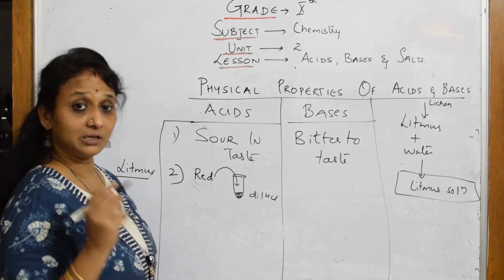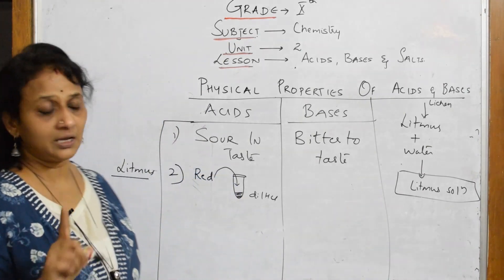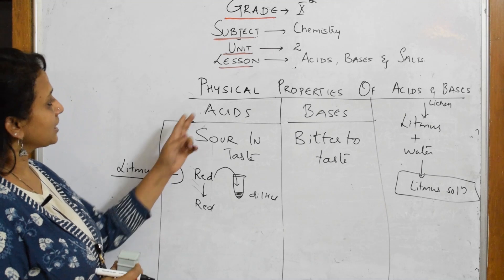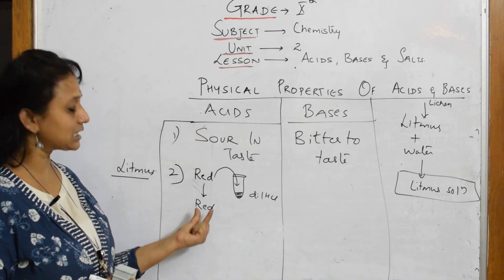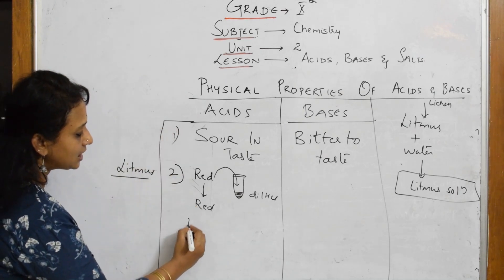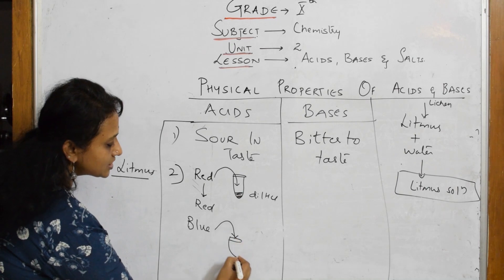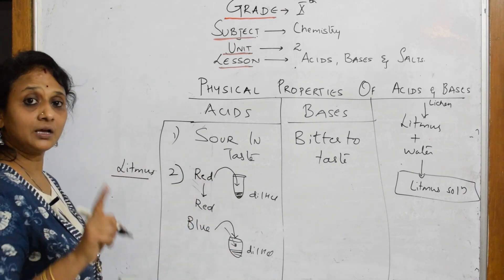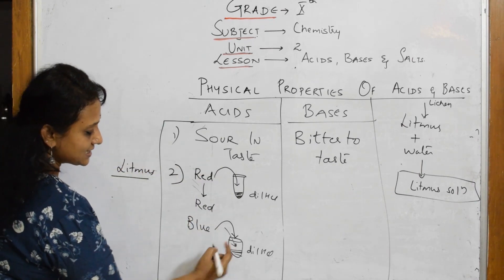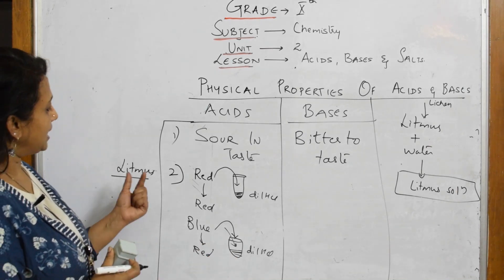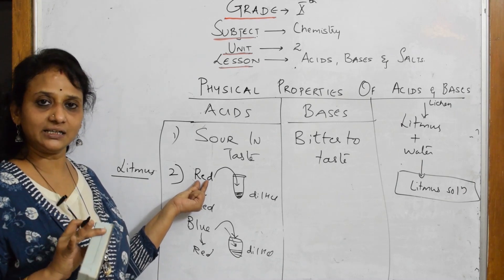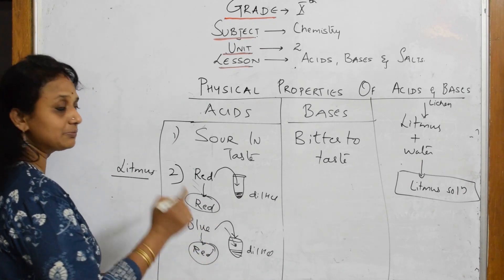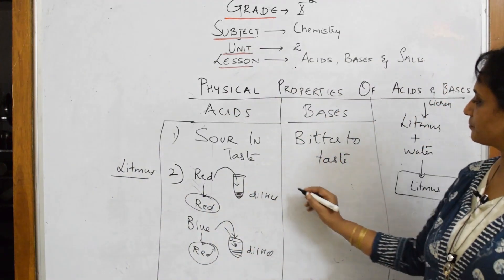When you dip the moist red litmus paper into HCl, red remains red. So in acids, the red litmus paper remains red. Now take a blue litmus paper and dip it into dilute HCl — in acids, the blue litmus paper will turn red. So the conclusion is: in acids, both red and blue litmus papers show red color. Red is the color of litmus in acids.